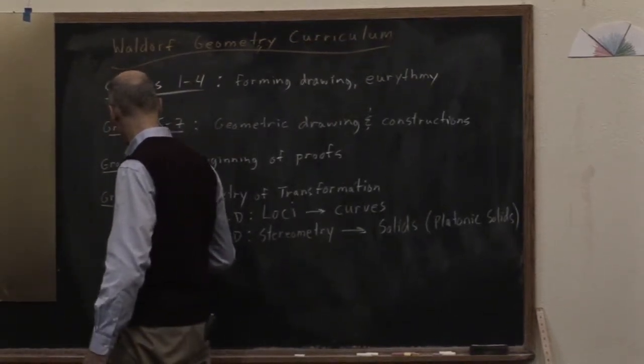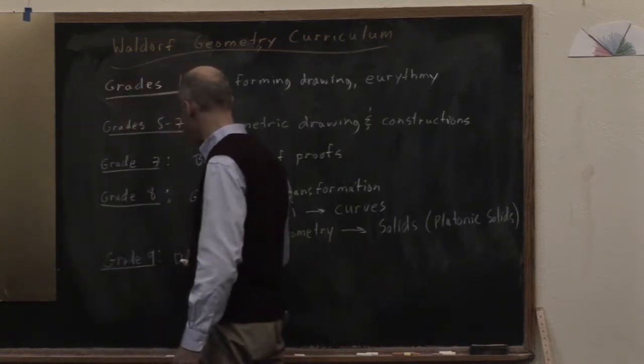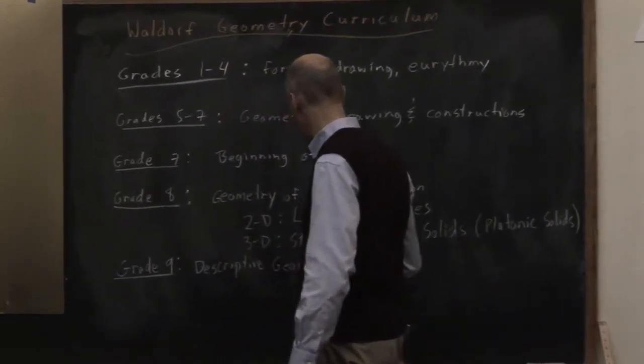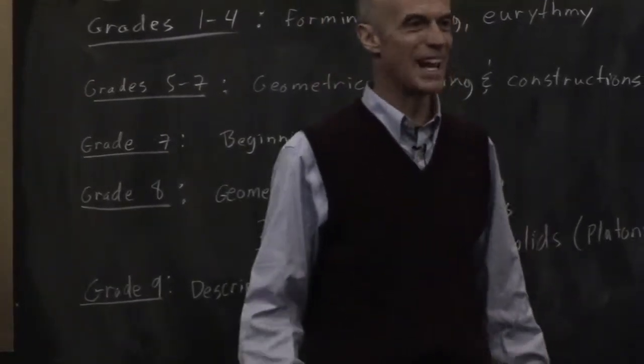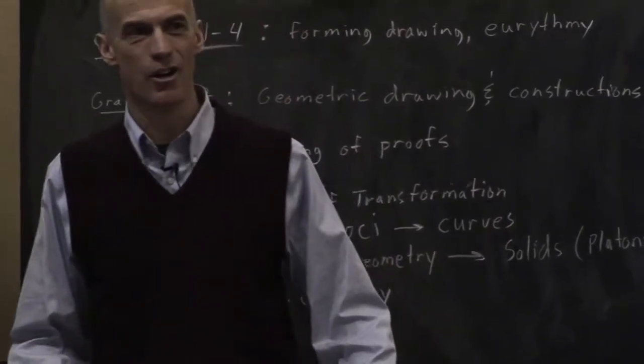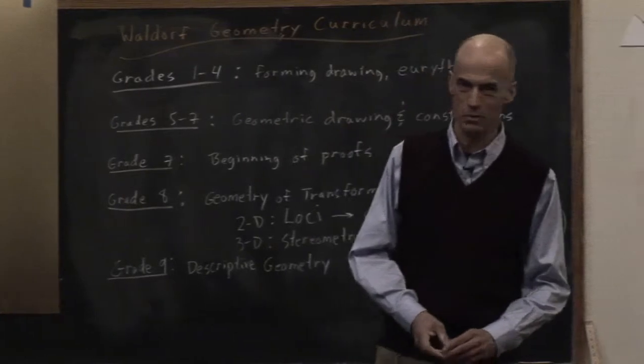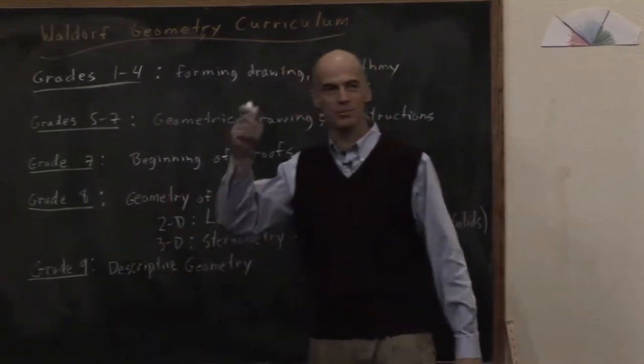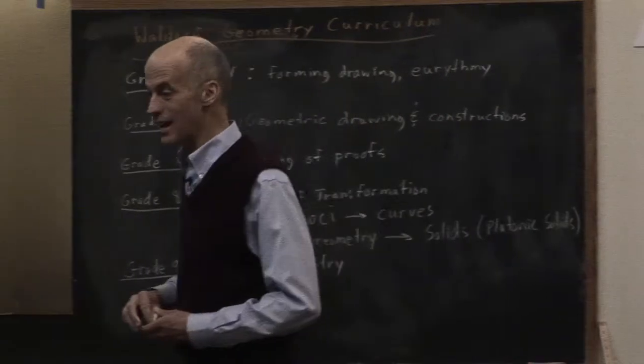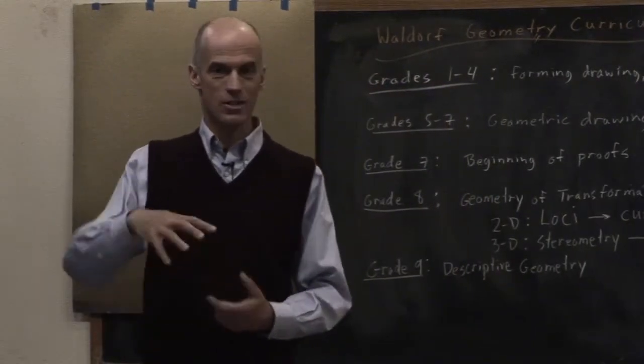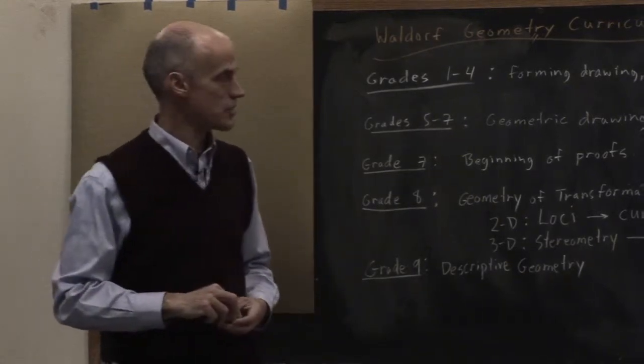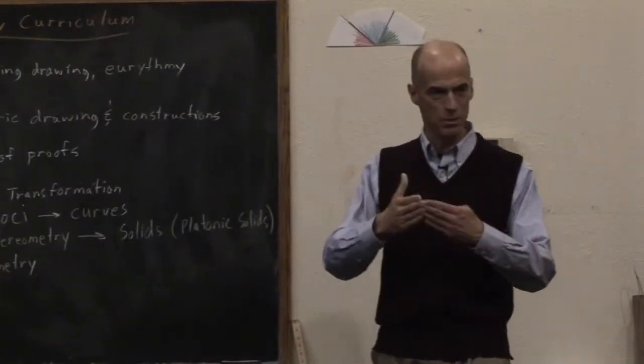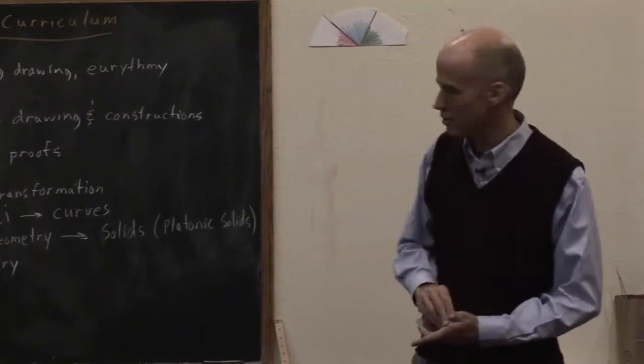Grade nine is descriptive geometry. Sometimes this could be called mechanical drawing. It used to be a course that anybody who was an engineer or an architect would have to take. Nowadays, it's a little bit different because we do many of these things with the computer through AutoCAD and various other programs. But descriptive geometry. How can we draw something exactly? How can we take a building, for instance, as an architect, and draw the top view, the side view, the front view? How can we take a platonic solid that we made out of clay and paper in eighth grade, how can we actually draw it with great precision and rotate it to look in a certain way? That's a wonderful exercise as well.